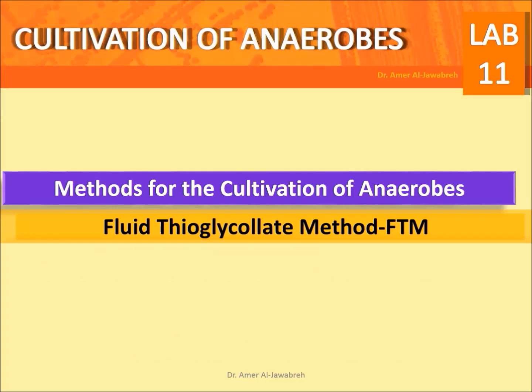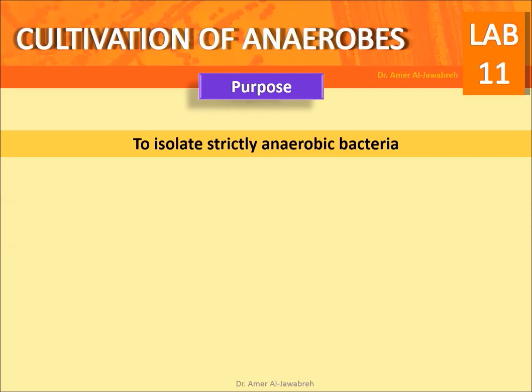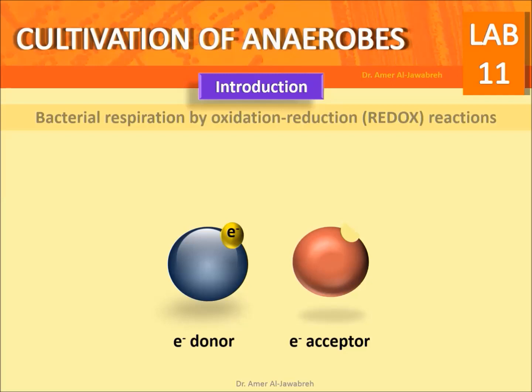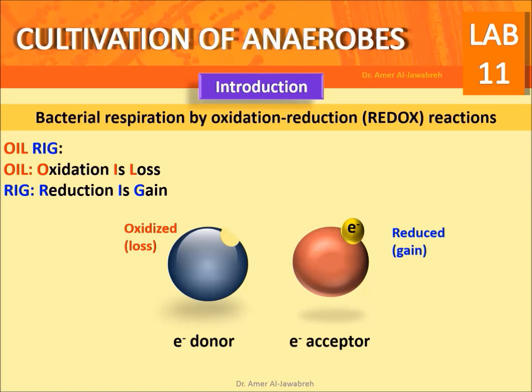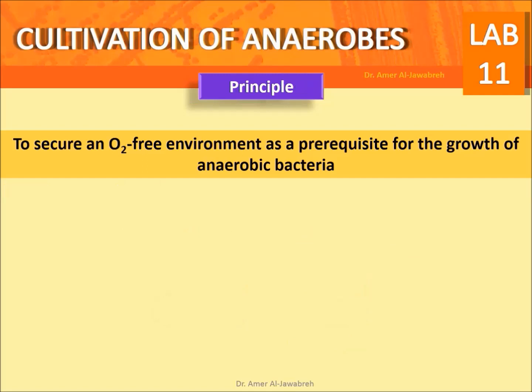Basic microbiology: a laboratory manual — methods for the cultivation of anaerobes, fluid thioglycolate method (FTM). Purpose: to isolate strictly anaerobic bacteria. Introduction: bacterial respiration involves bio-oxidation reduction (redox) reactions. The electron donor loses its electron and hydrogen ion, becoming oxidized, while the electron acceptor gains the electron and hydrogen ion, becoming reduced. OIL RIG: oxidation is loss, reduction is gain. Principle: to secure an O2-free environment as a prerequisite for the growth of anaerobic bacteria.